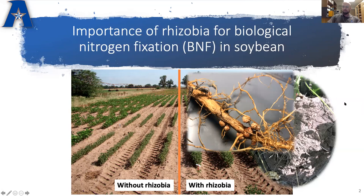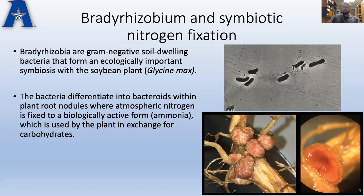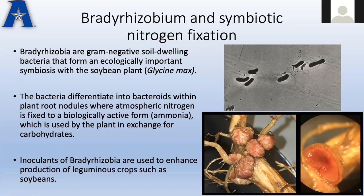What's occurring in these nodules is biological nitrogen fixation, where the organism fixes nitrogen for the plant. Bradyrhizobium are gram-negative soil-dwelling bacteria that form an ecologically important symbiosis with the soybean plant. The bacteria differentiate into bacteroids when they infect the plant root and form nodules, where atmospheric nitrogen gets fixed to a biologically active form of ammonia. They exchange this to the plant for carbohydrates from photosynthesis. Inoculants of bradyrhizobia are typically used to enhance production of leguminous crops such as soybeans.